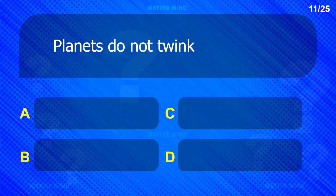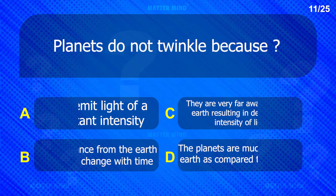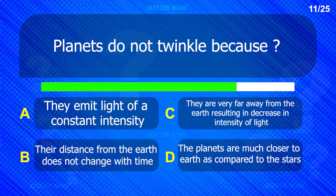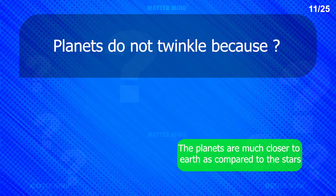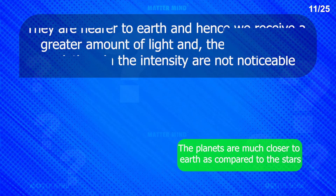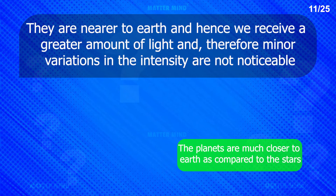Planets do not twinkle because the planets are much closer to earth as compared to the stars. They are nearer to earth and hence we receive a greater amount of light, and therefore minor variations in the intensity are not noticeable.